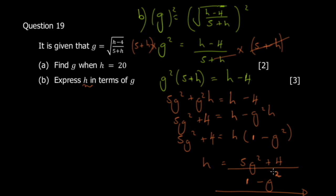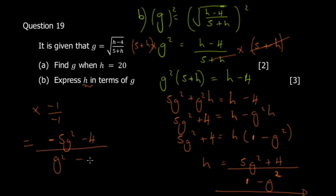There's also an equivalent variation: if you multiply numerator and denominator by -1 you get h = (-5g² - 4) / (g² - 1). Both answers are actually the same — just rearranged. Depending on how you move your terms you should get one of these, and neither is wrong.